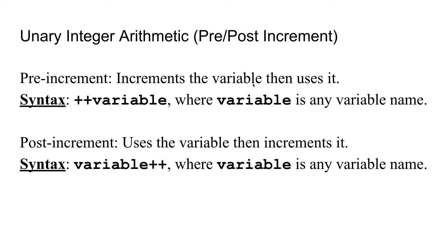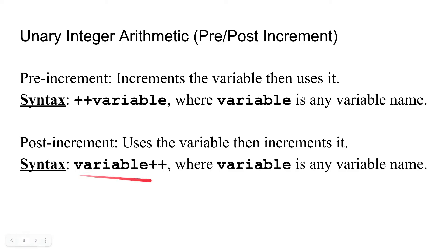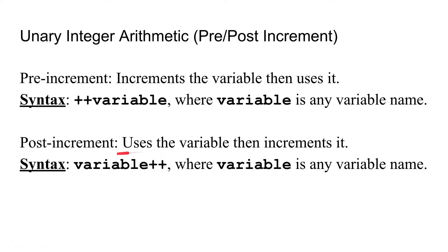The post-increment operator is a unary operator that uses a variable and then increments it. Its syntax is variable++, with the ++ after the variable. This operator will also increment the variable by one, so if the variable was zero it would become one, but it will first use the variable before incrementing it.